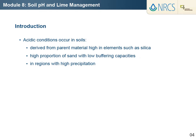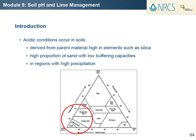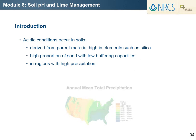In contrast, acidic conditions occur in soil derived from parent material high in materials such as silica — for example, rhyolite, granite, and sandstone — in soils with high levels of sand with low buffering capacities defined as the ability to resist pH change, and in regions with high precipitation and a long period of weathering and soil formation.